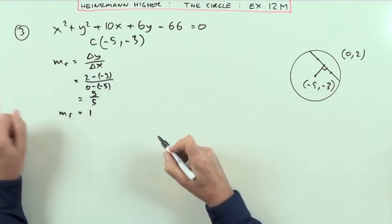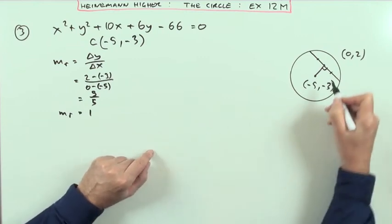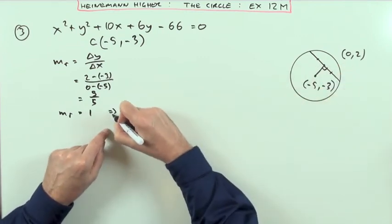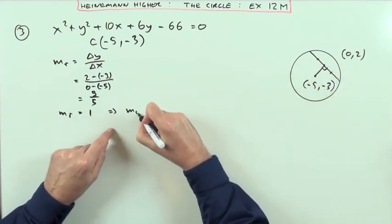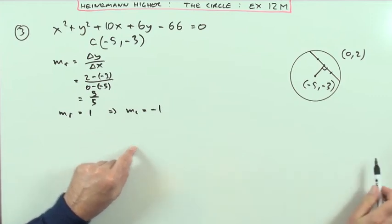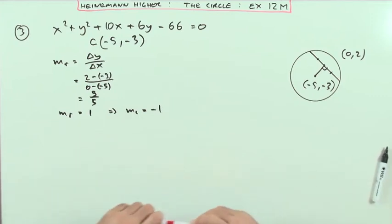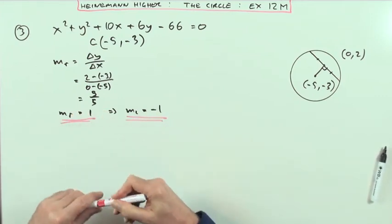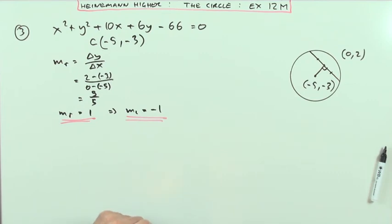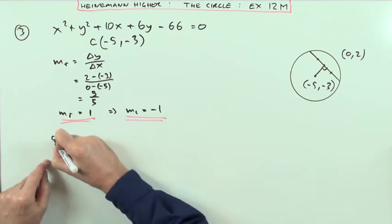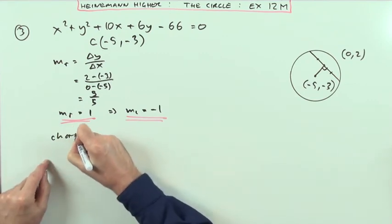That means the gradient of the radius is 1. Straight away you know the gradient of the chord — the gradient of the chord is going to be negative one, since they multiply to give negative one. The last part will simply be: what's the equation of the chord?